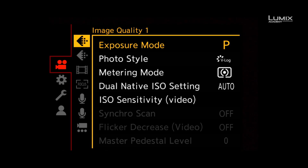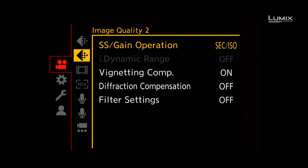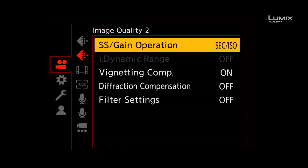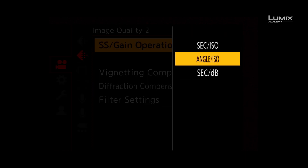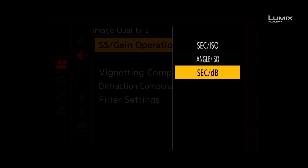To activate the shutter angle in the S1H, simply go to the Image Quality 2 submenu on the Video Options and select Angle ISO. There is also an option to show ISO as gain values.